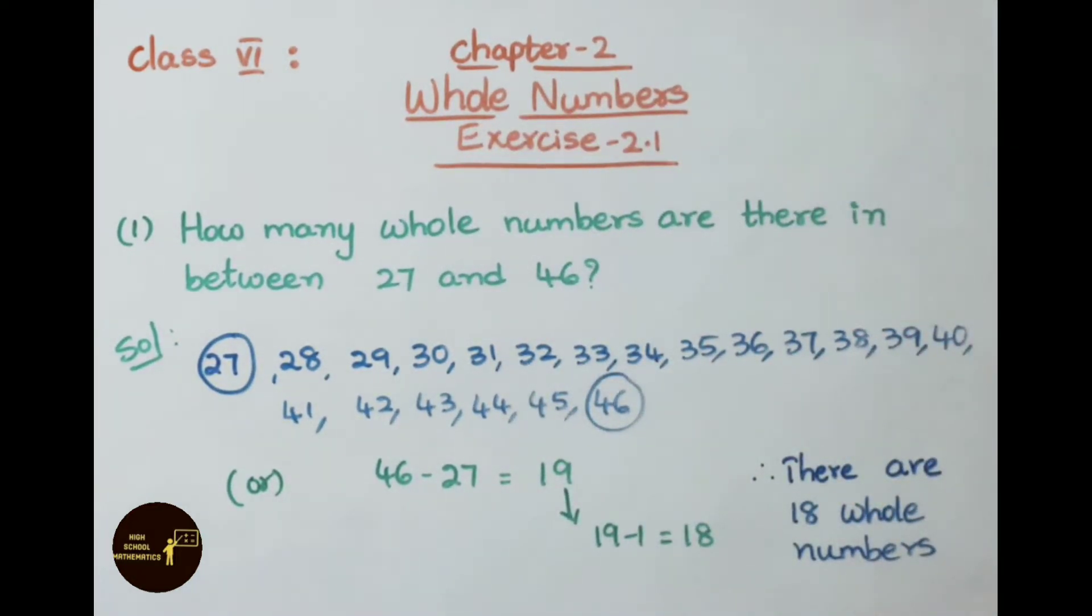See the first question: How many whole numbers are there in between 27 and 46? I have written numbers from 27 to 46. Let us count the numbers, how many are there in between them: 1, 2, 3, 4, 5, 6, 7, 8, 9, 10, 11, 12, 13, 14, 15, 16, 17, 18. So from 27 to 46, in between there are 18 whole numbers.